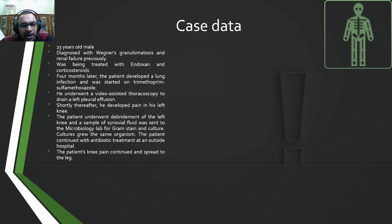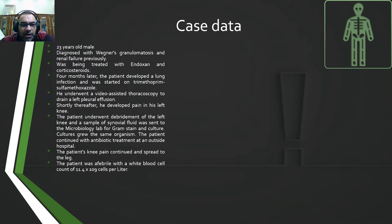The patient's knee pain continued and spread to the leg. The patient was afebrile with a white blood cell count of 11.4, slightly elevated. He showed mild renal insufficiency with a creatinine of 1.5 mg per deciliter.